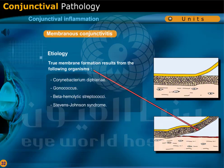True membrane formation results from the following: diphtheria, gonococci, beta-hemolytic streptococci, and Stevens-Johnson syndrome.